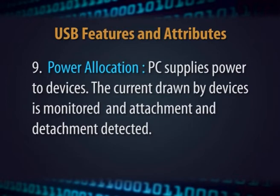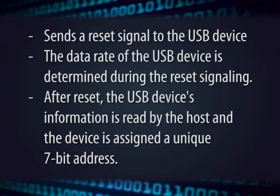9) Power allocation: the PC supplies power to devices. The current drawn by devices is monitored and attachment and detachment detected. When a USB device is first connected to a USB host, the USB device enumeration process is started. The enumeration starts by sending a reset signal to the USB device, and the data rate is determined during reset. After reset, the USB device's information is read by the host and the device is assigned a unique 7-bit address. If the device is supported, device drivers are loaded and the device is set to a configured state. If the USB host is restarted, the enumeration process is repeated for all connected devices.